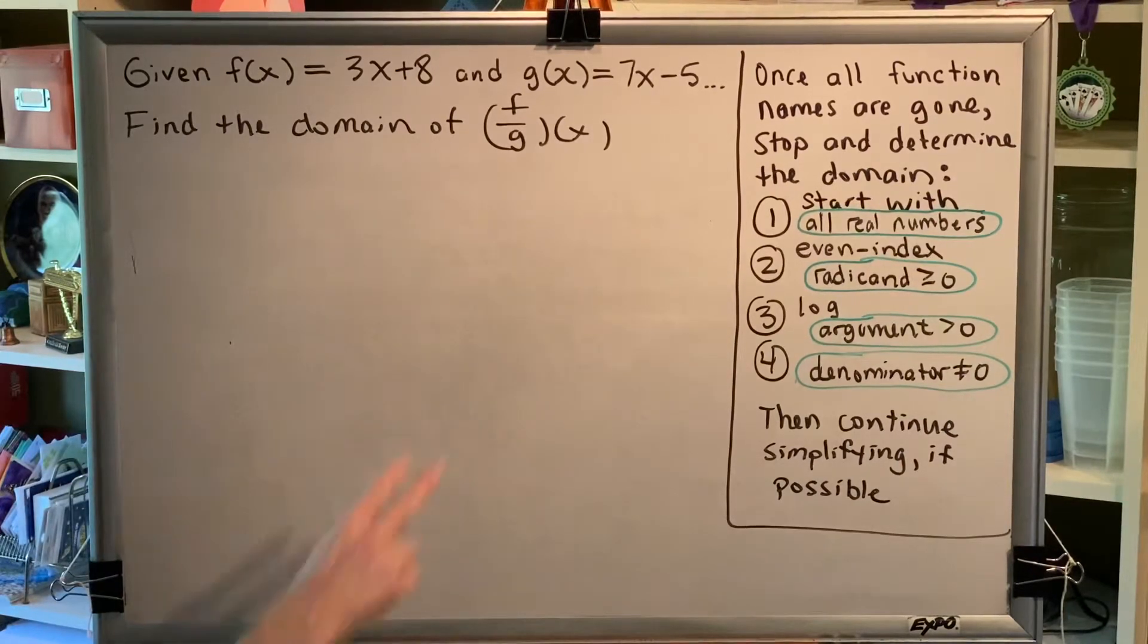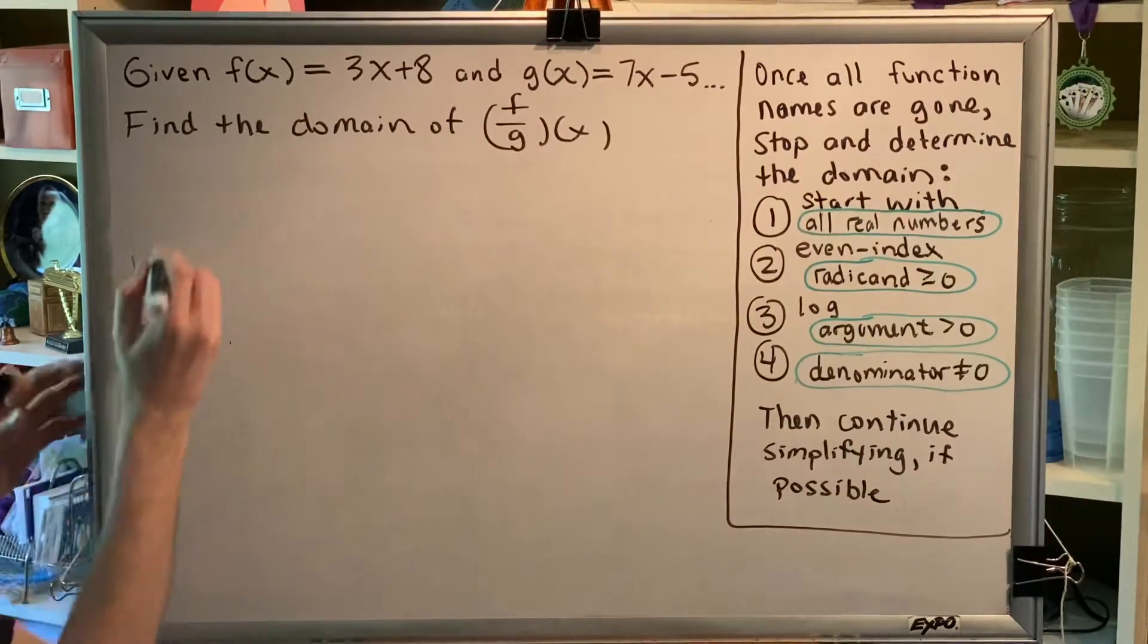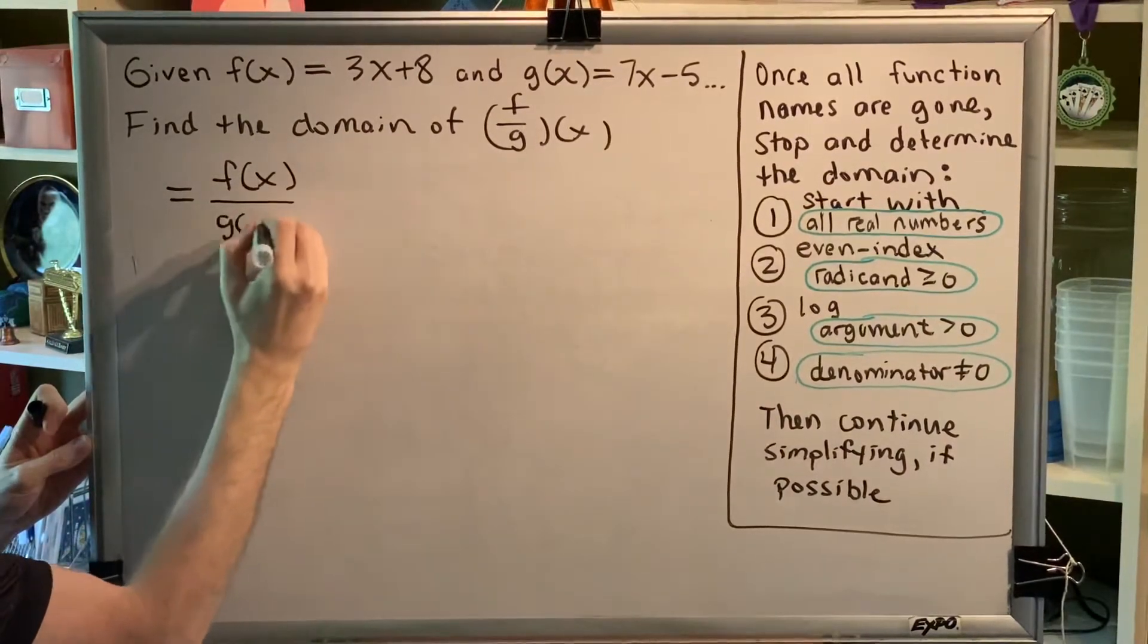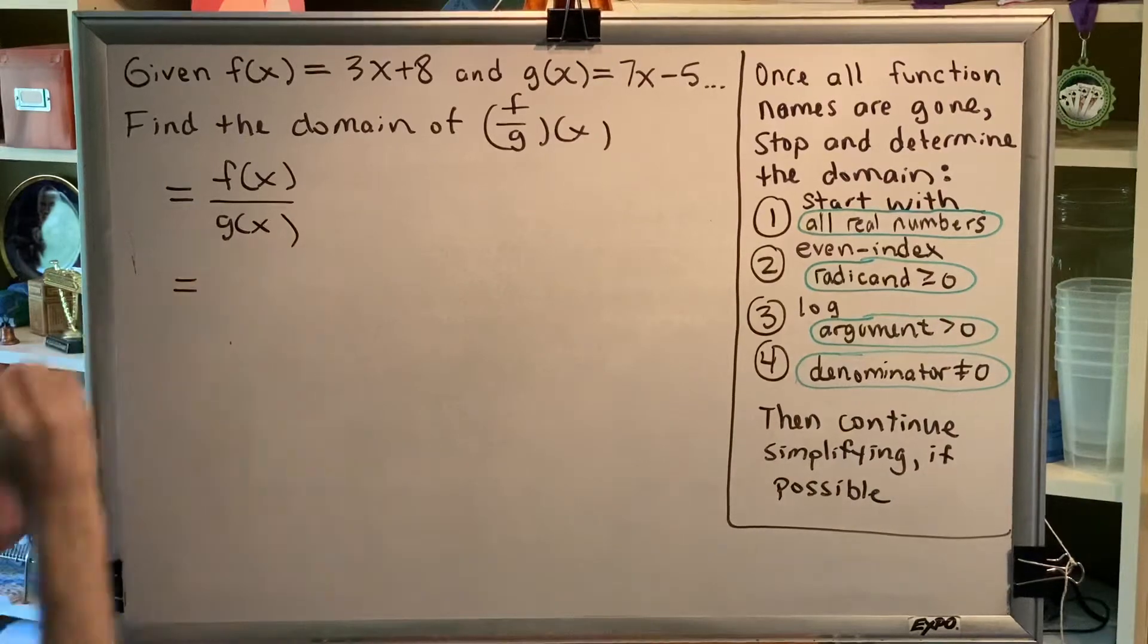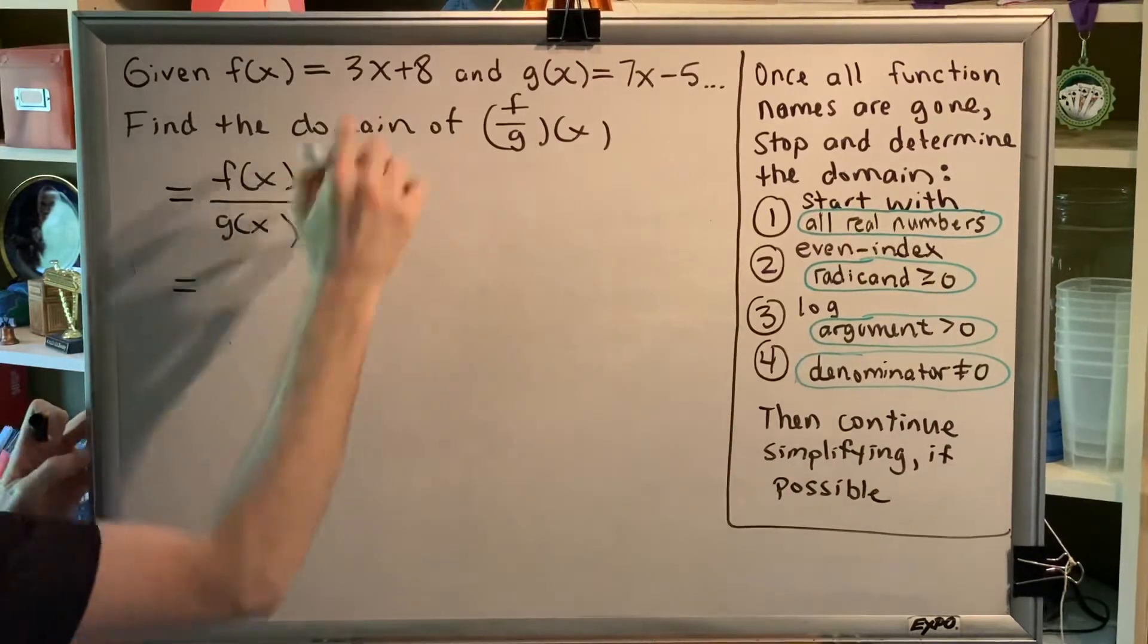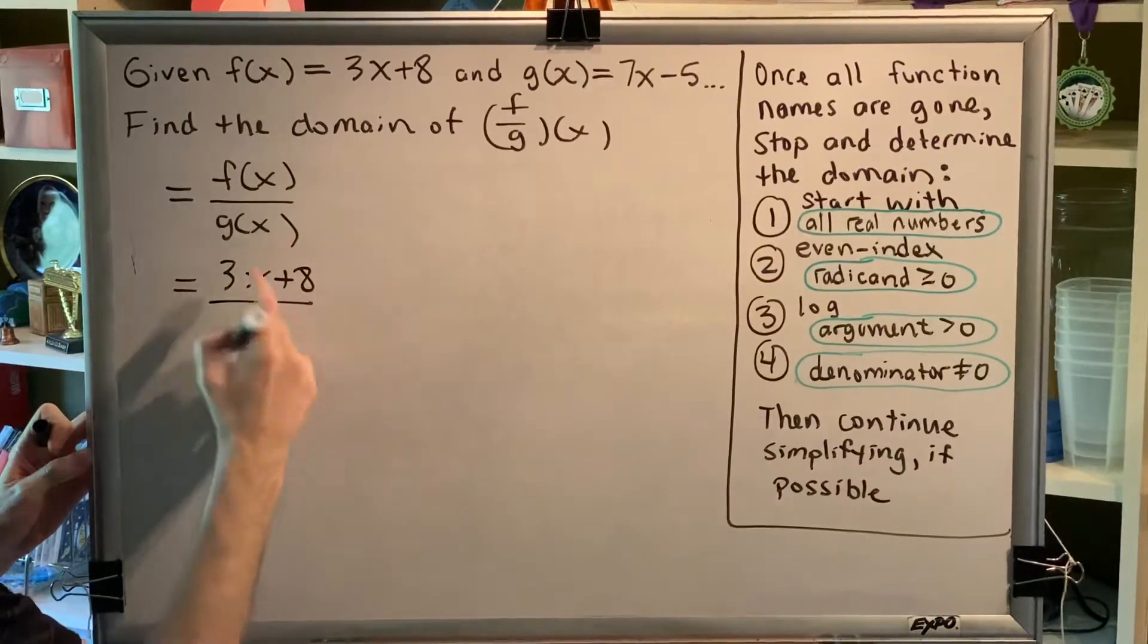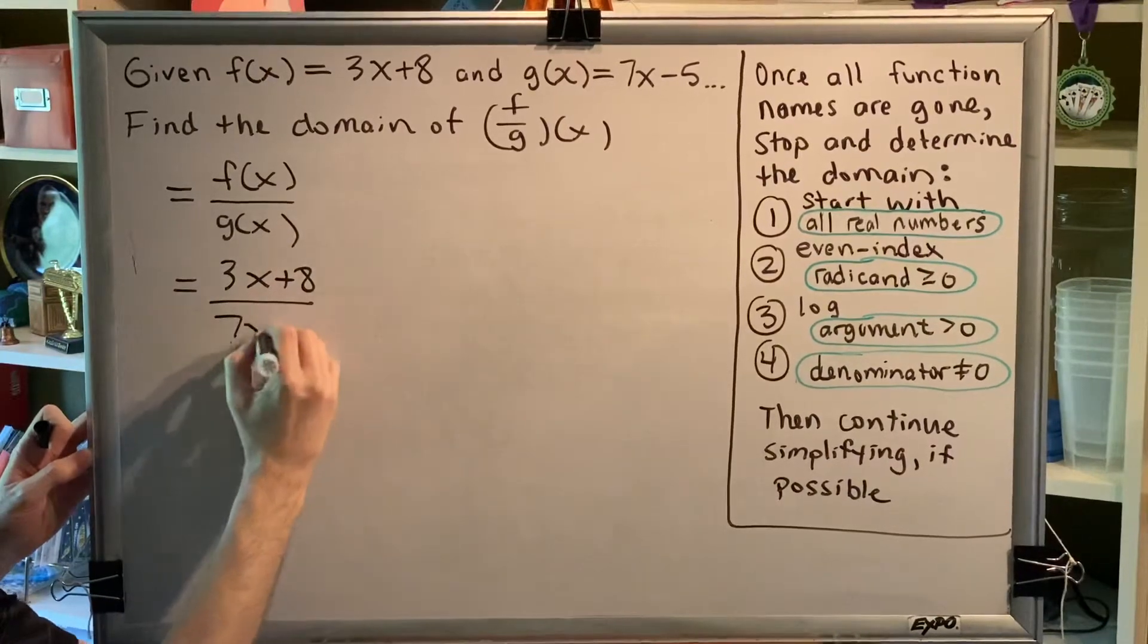Okay, well the name f over g of x means that we're taking our function f of x and our function g of x and we're dividing them. Now we know that f of x is equal to 3x plus 8 and we know that g of x is equal to 7x minus 5.